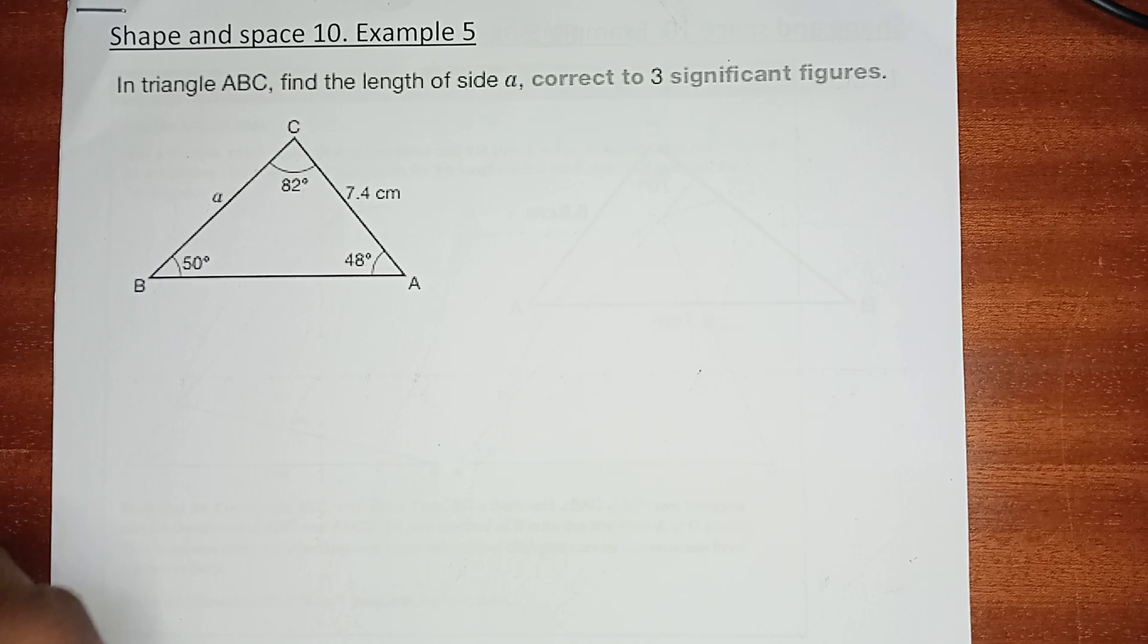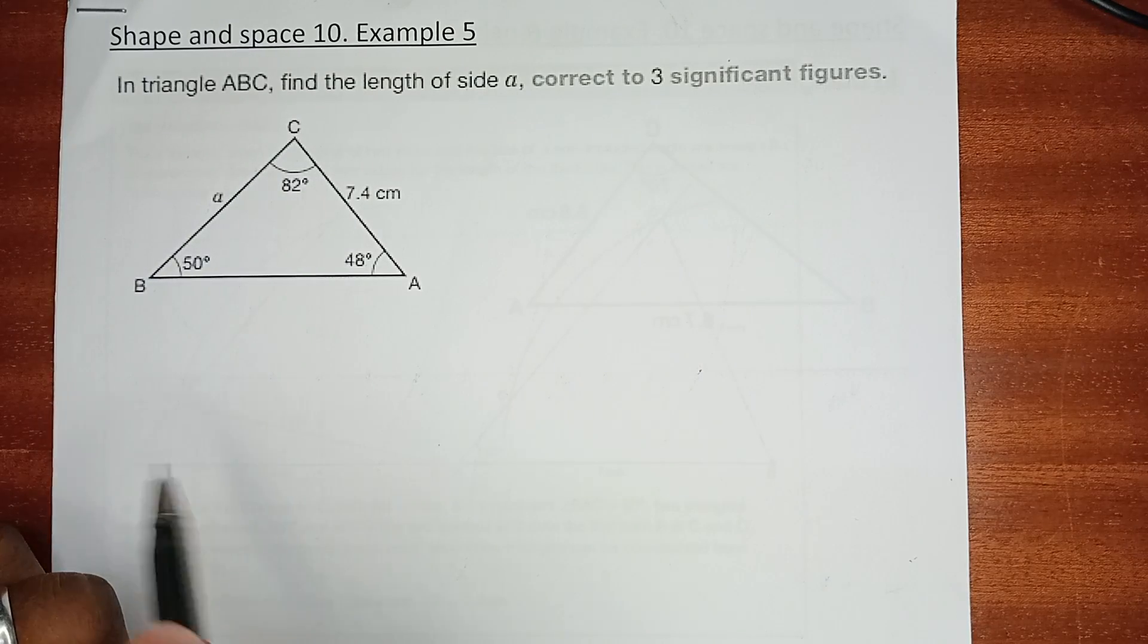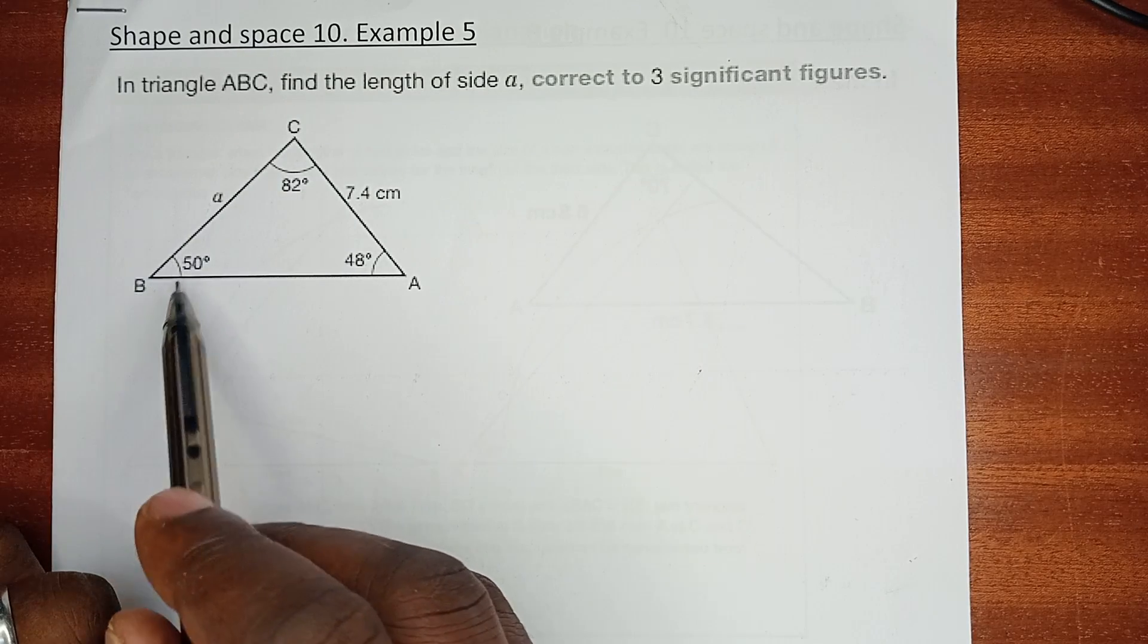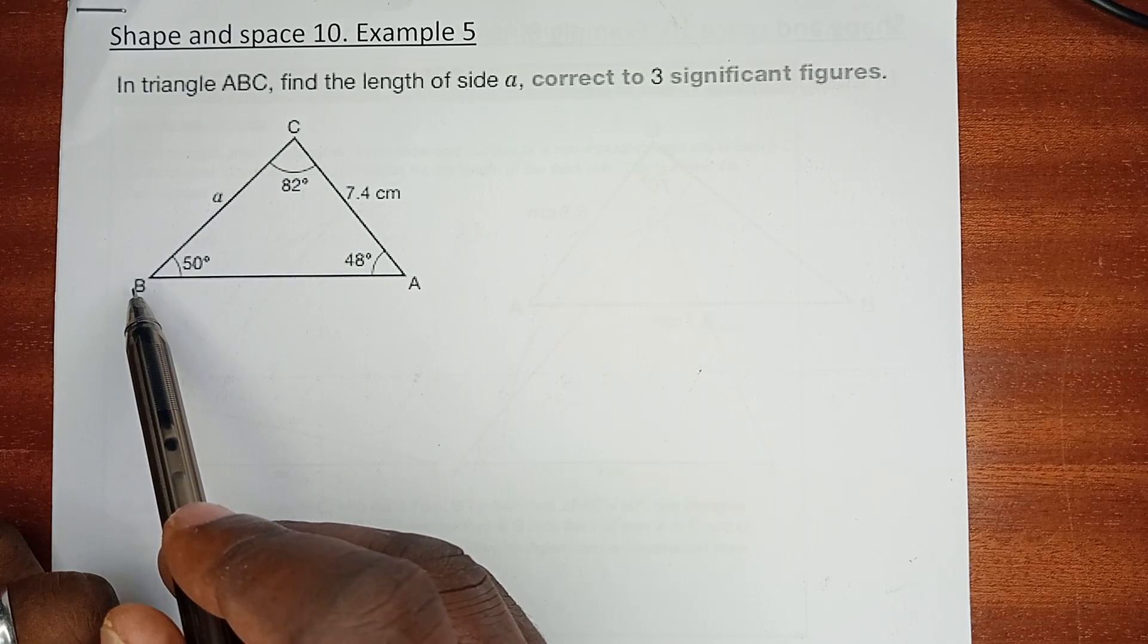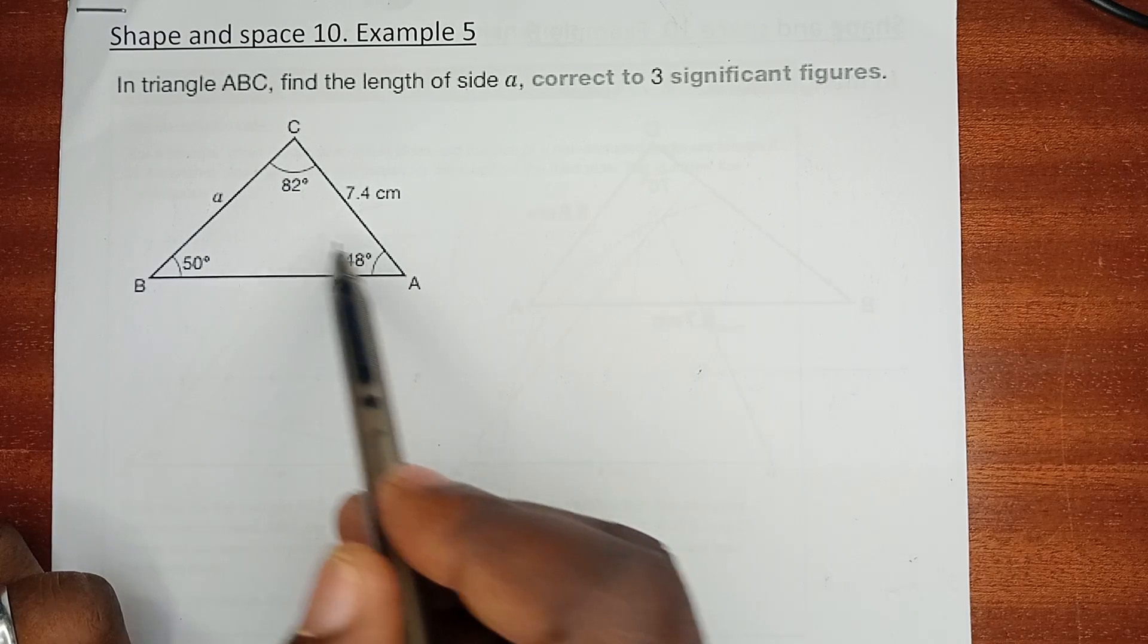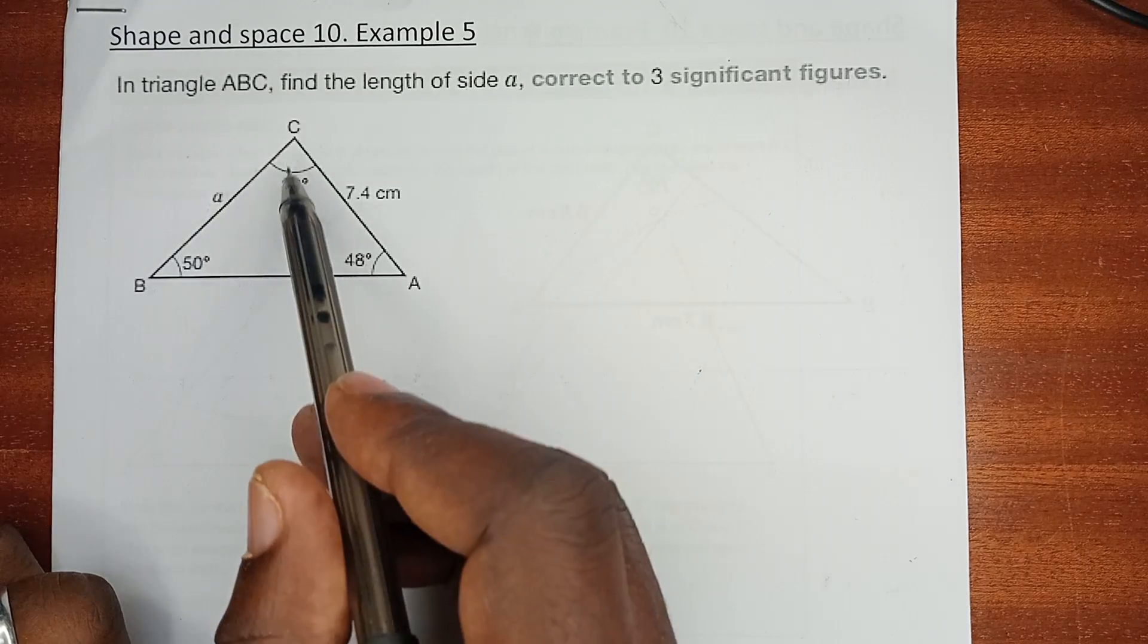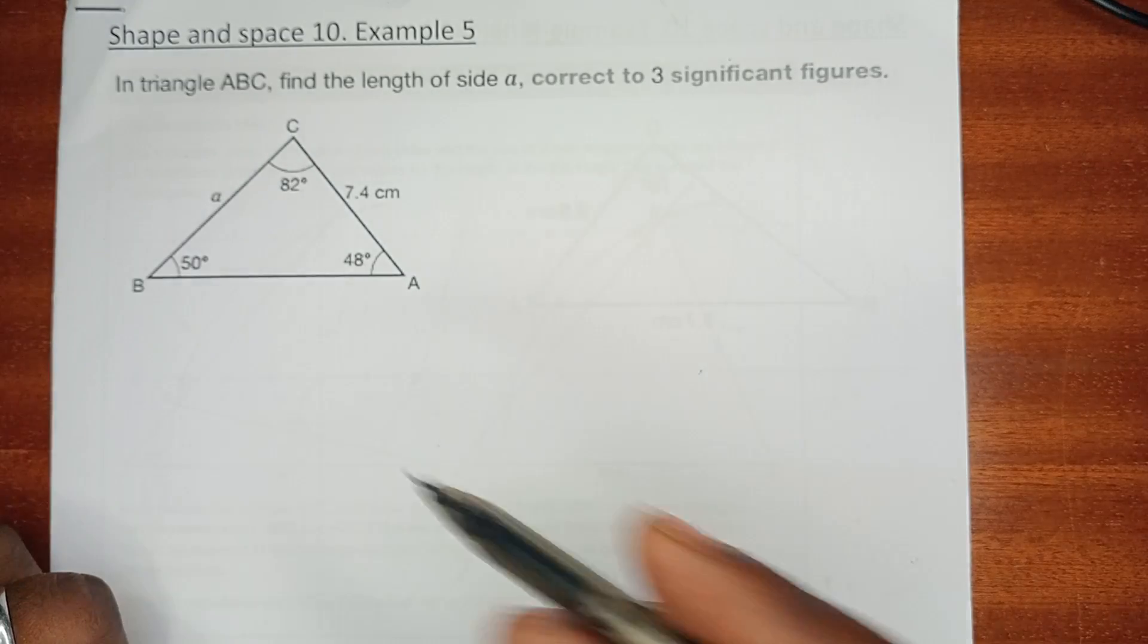We have been told that if you have a triangle of this nature, then this angle is B, this angle is A, and this angle is C. If this is B then this is side b, if this is angle A then this is side a, if this is angle C then this is side c.